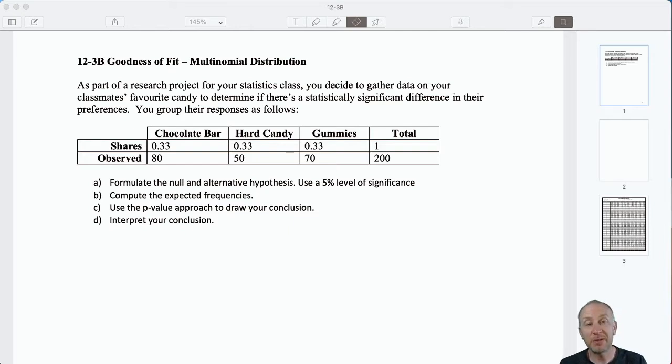So here we have a set of frequencies that begin with the assumption that between these three types of candy—chocolate bar, hard candy, and gummies—the fact that here we have all equal shares, that is starting with an assumption that there's no difference in preferences, that all of my classmates have the identical preferences across these three different types of candy. Then we do a survey and we ask which one do you prefer?